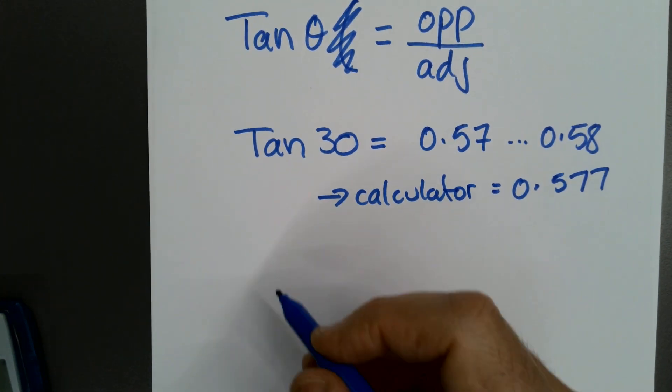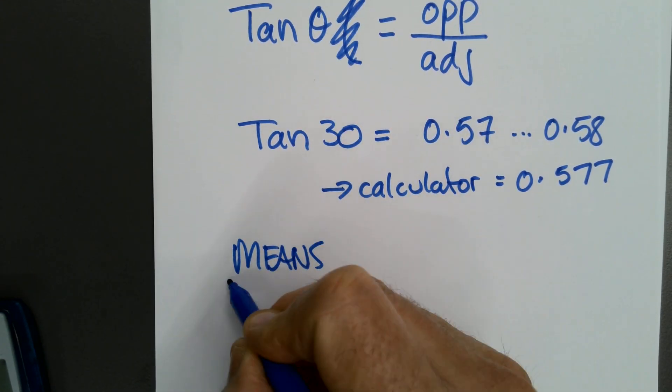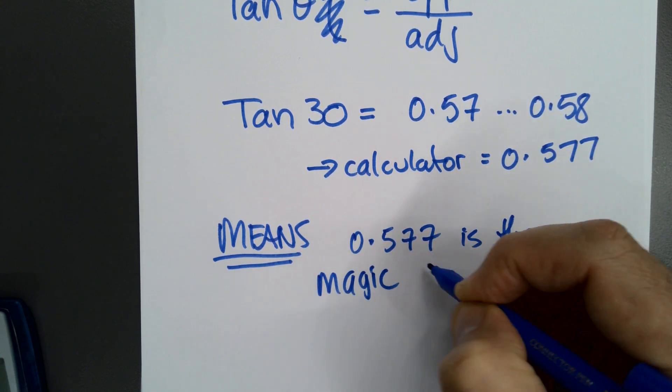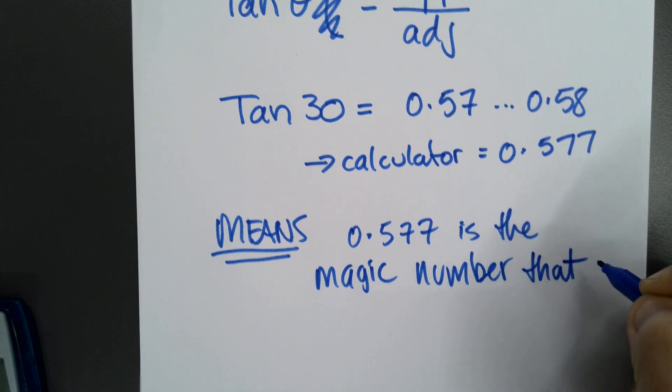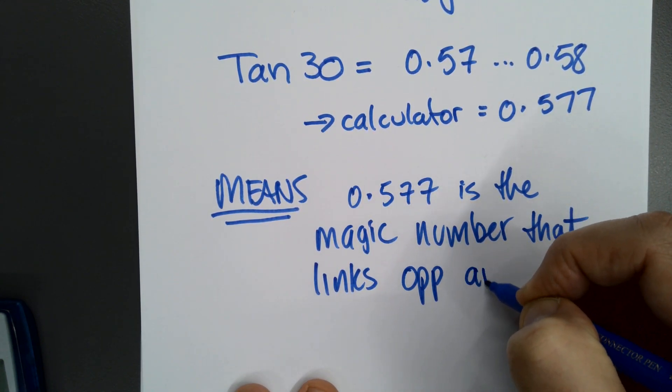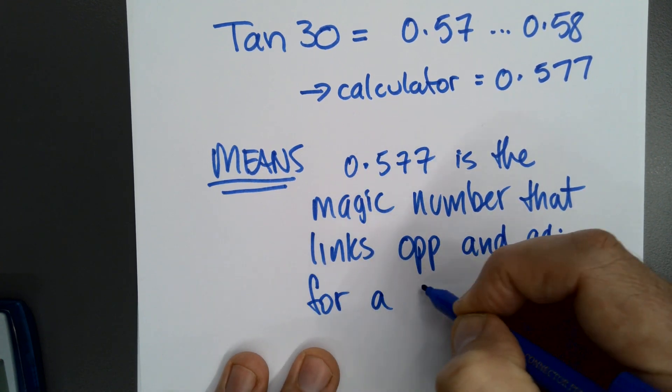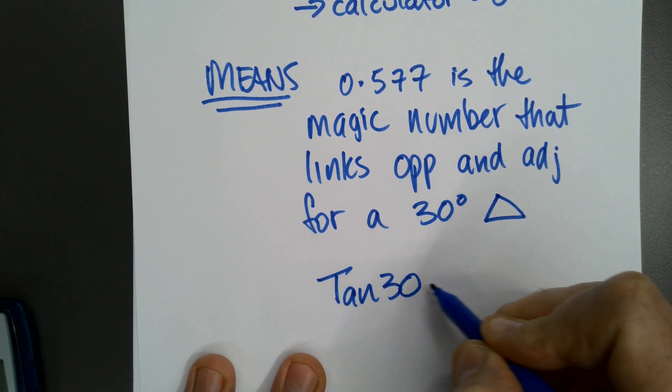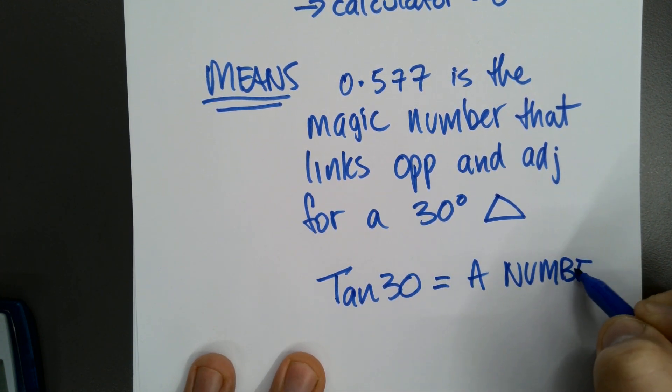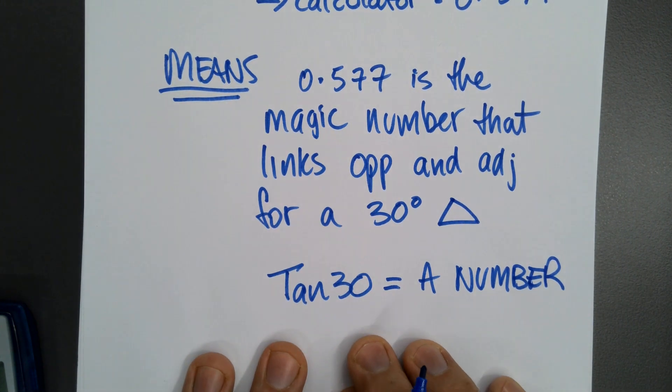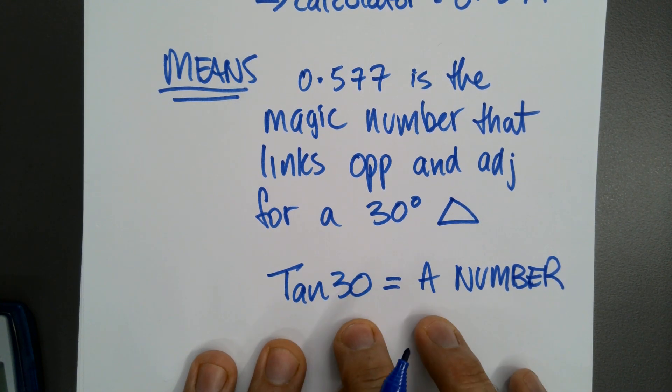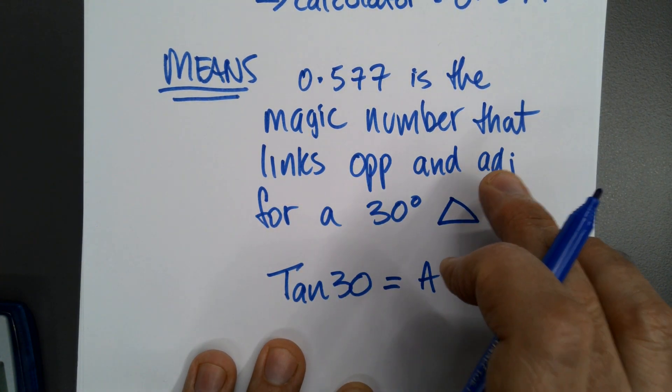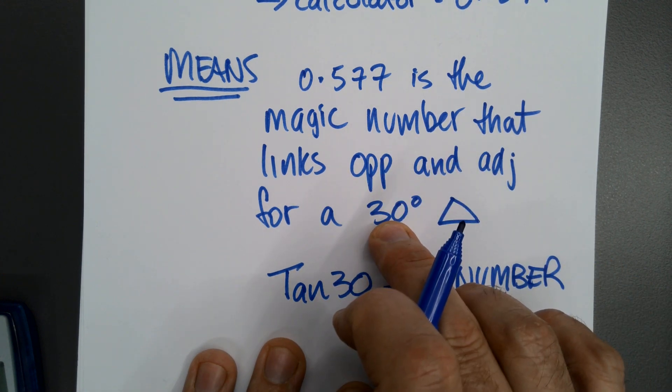So what's that mean? That means 0.577 is the magic number that links opposite and adjacent for a 30 degree triangle. So when we write tan 30, that equals just a number. That's all it is. There's nothing magical about it - well, actually there is nothing magical about it. But it's just a number, just a code for a particular number. And it is the fraction or the decimal number that links the opposite and the adjacent for a right angle triangle when there's 30 degrees.